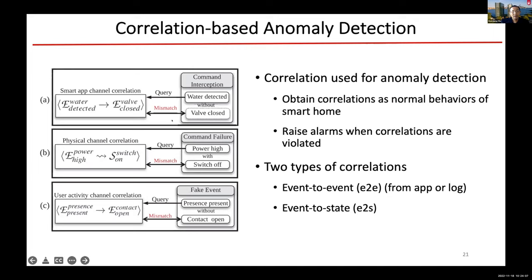Here's an example: this is a correlation obtained either from the automation rule or the physical channel. When water leaking is detected, there's an automation that will automatically close the valve — this is what happens most of the time, as defined by the user in the smart app. So if in the real world we detect water leaking, but within a small amount of time the valve is not closed, there's a mismatch. Then we raise an alert to tell the owner: water was detected, but the valve is not closed.